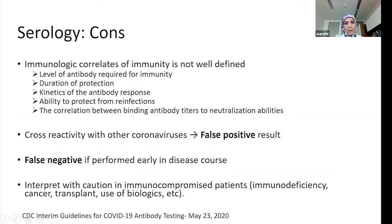One limitation to remember about serology is that the immunological correlate of immunity is not yet defined. Yes, you are detecting antibodies and the individual has seroconverted with antibodies towards the COVID virus, but whether that means the individual is immune is still unknown.